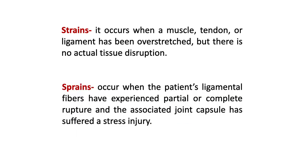The most common types of injuries in sports are strains and sprains. A strain occurs when a muscle, tendon, or ligament has been overstretched but there is no actual tissue disruption — for example, a minor twist or overexertion during a workout. A sprain, on the other hand, occurs when a patient's ligament fibers have experienced partial or complete rupture, and the associated joint capsule has suffered a stress injury — meaning there is actual tissue tearing.